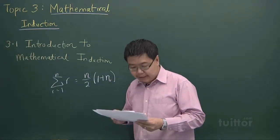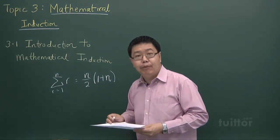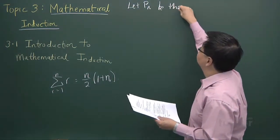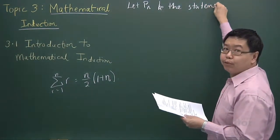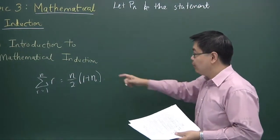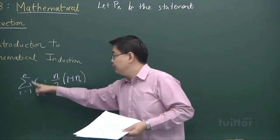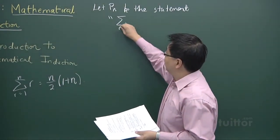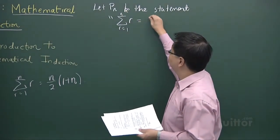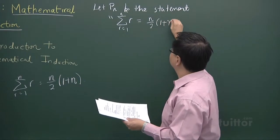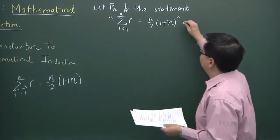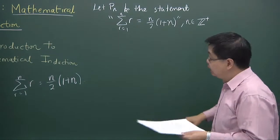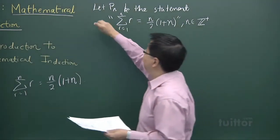There are generally four steps to mathematical induction. The first step is to state the statement that we want to prove. We write it as: let P(n) be the statement that the summation of r from 1 to n equals n over 2 times (1 plus n). We must also state that n is restricted to positive integers. This is step one of mathematical induction.